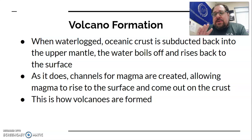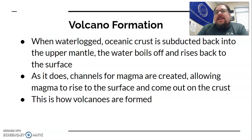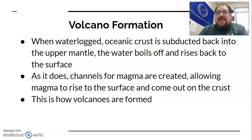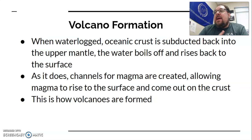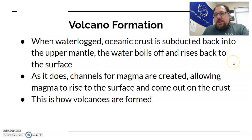That's not the only way volcanoes form — you can also have what's called hot spots. That's basically where you've got a weak or thin spot in the crust which allows magma to come to the surface. The best example is Hawaii. Hawaii is not anywhere near a plate boundary — it's in the middle of the Pacific plate — but there is a hot spot there, which allows that volcanic island chain to form. Most volcanoes, however, are formed through subduction of oceanic crust.